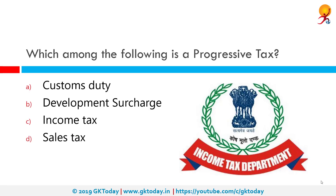Which among the following is a progressive tax? The correct answer is income tax. In progressive taxation, the tax liability increases with individual or entity income. This is based on the principle of ability to pay. Under this system, lowest income people are generally exempted while highest income people pay the highest taxes. Income tax is thus an example of progressive tax, and progressive taxation results in redistribution of income from rich to poor.